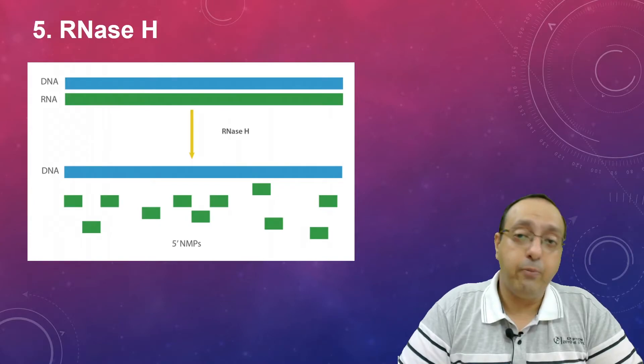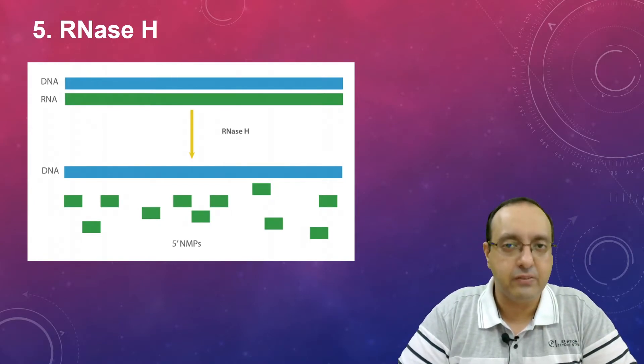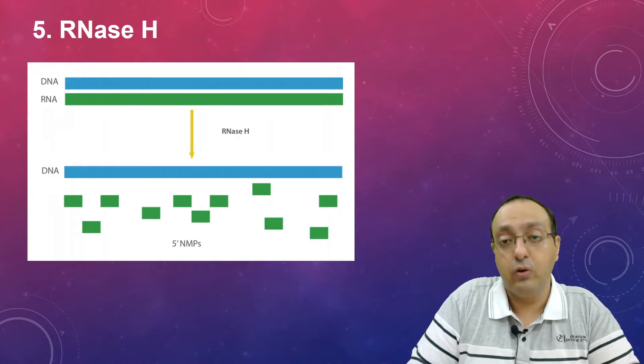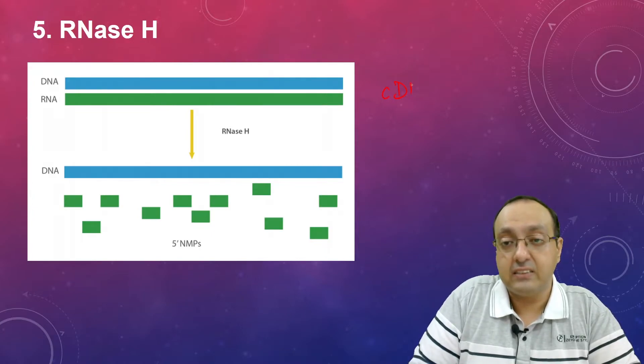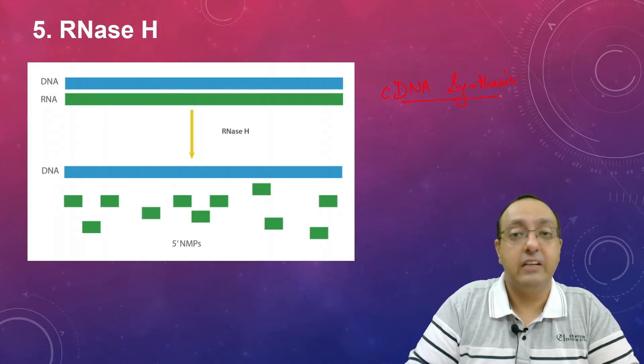Another type of RNase is called RNase H. It has a slightly different specificity. It can recognize RNA-DNA hybrids and specifically degrade RNA, so it is very useful in cDNA synthesis where we want to get rid of the RNA and then synthesize the second DNA fragment.